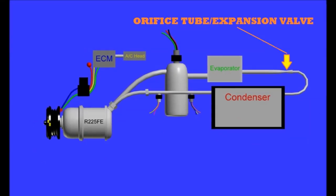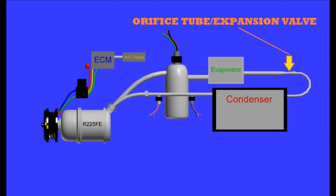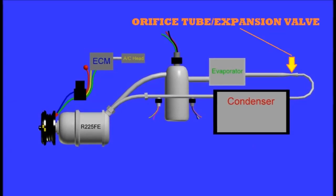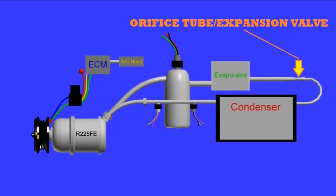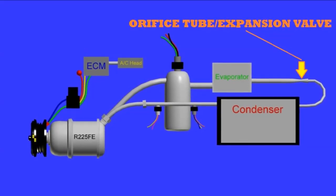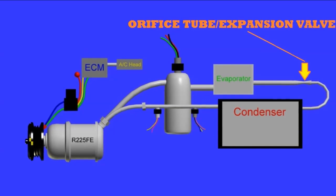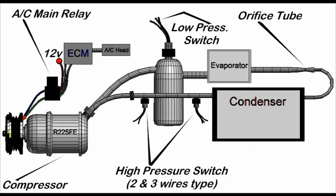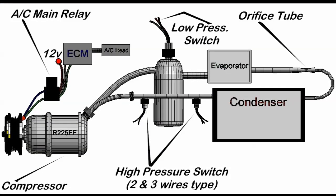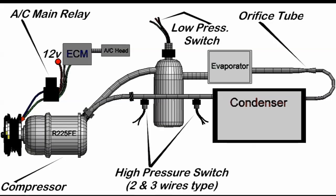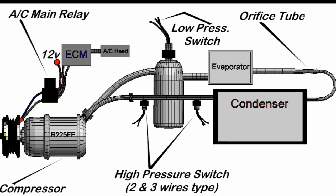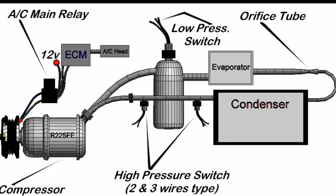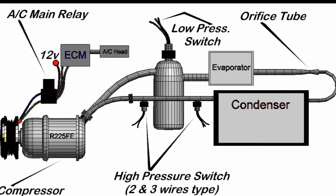As you can see on screen, this is a complete automotive HVAC system with the ECM, the AC head which is the AC computer, and the main relay that actuates the compressor clutch. You can also see the sensors, the high pressure and low pressure sensors, the condenser, and the evaporator.